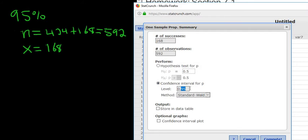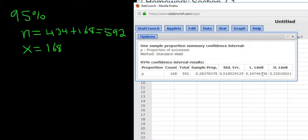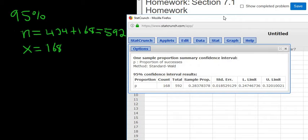If it was like 99, we would change it to 0.99. Leave the method part alone. Then click compute, and you'll see your answers appear here, lower and upper limit.